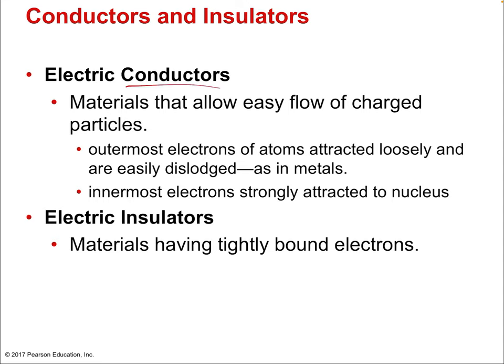Electrical conductors are materials that allow easy flow of charged particles — the outermost electrons of atoms are loosely attracted and easily dislodged, like metals. The innermost electrons remain bound to the nucleus. Insulators, on the other hand, have tightly bound electrons throughout their entire electron population — all electrons stay put and don't move freely. Examples of insulators include wood, rubber, and glass. Anything that's a good conductor of heat is also generally a good conductor of electricity.